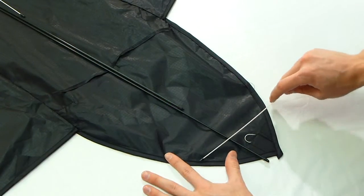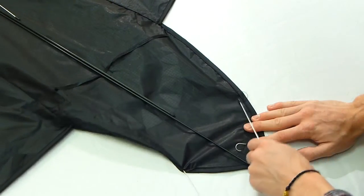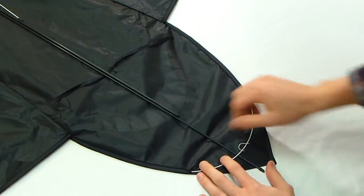Take the long white spar and slide it through the gap on one side as far as it will go. Then gently bend the spar and slide it into the gap on the other side.